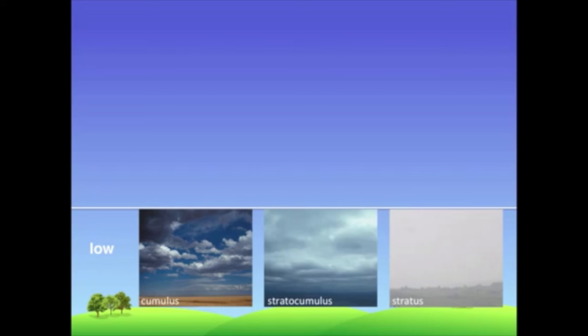Stratocumulus clouds look like a combination of stratus and cumulus clouds. They have puffy cumulus shapes but are elongate and uniform like stratus clouds.